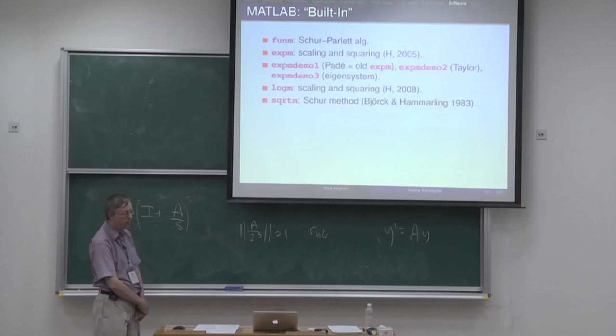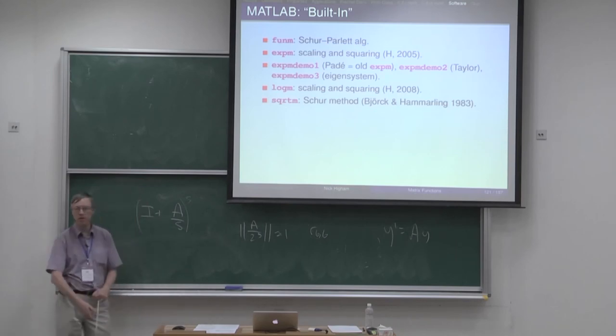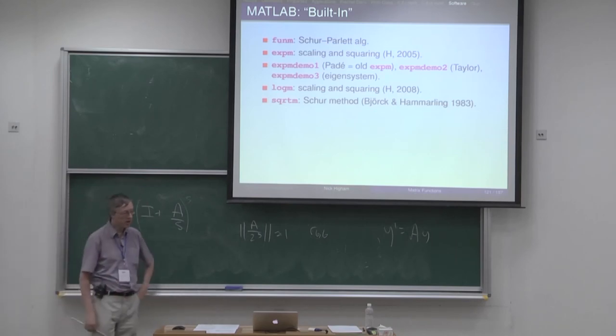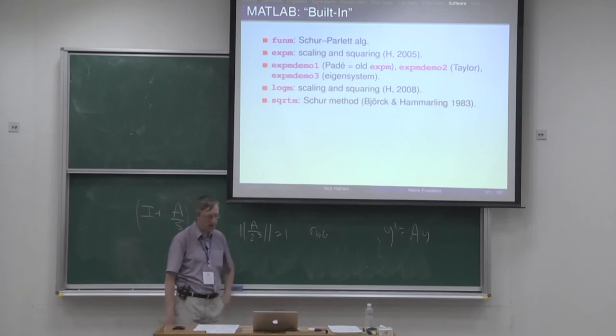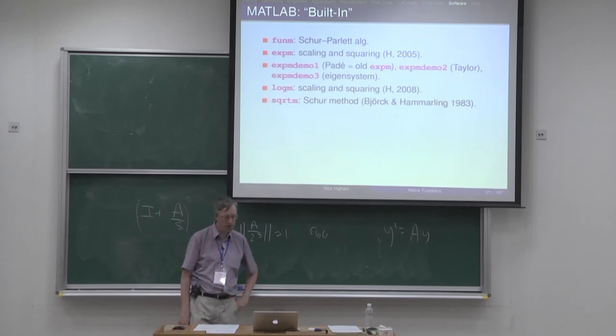sqrtm is the function for matrix square roots, using the Björck-Hammarling method: going through the Schur form and applying a finite recurrence to get the square root. It works with the complex Schur form only, even for real input. It also has built-in condition estimation to give you the condition number along with the computed square root.